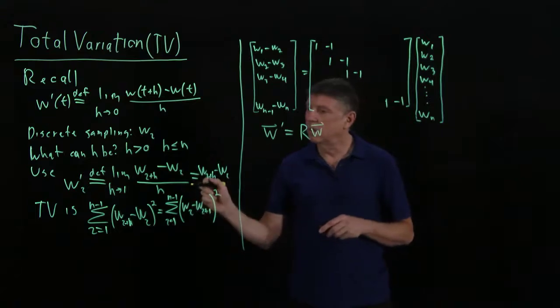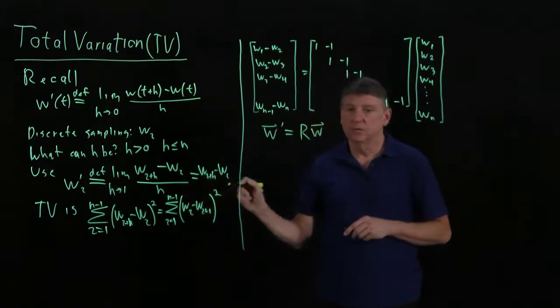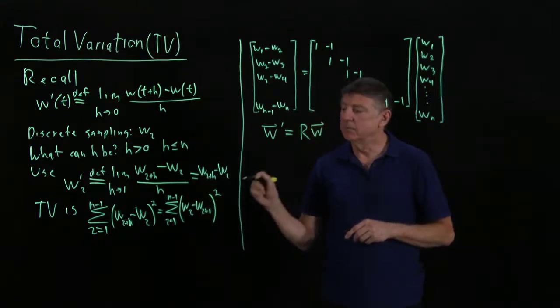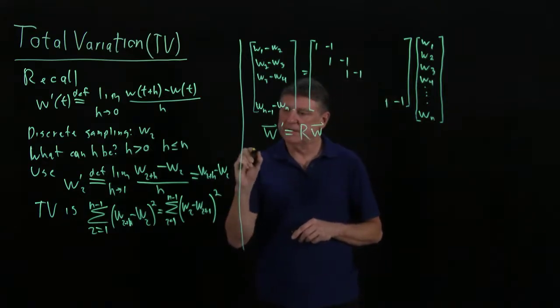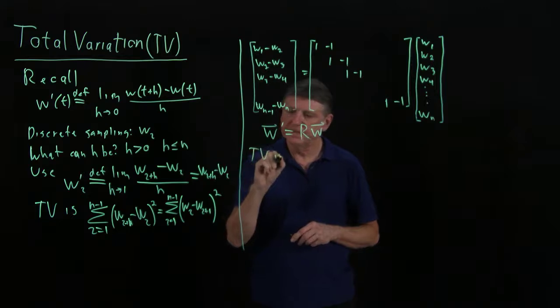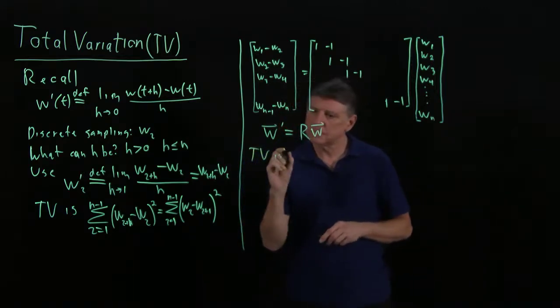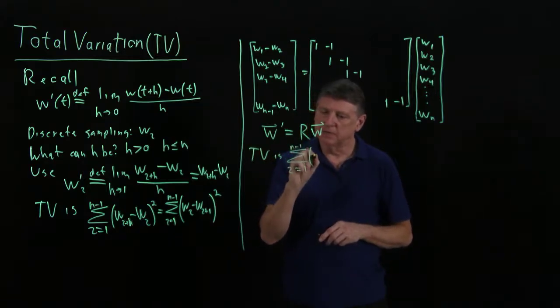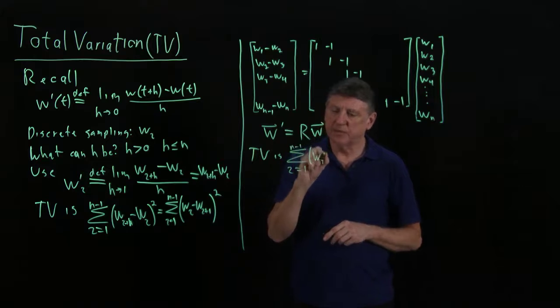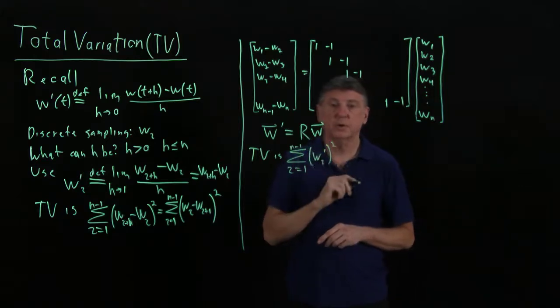So now I can write that discrete regularizer in a number of ways, right? I can say that the total variation is, I can say that that is the sum as i goes from 1 to n minus 1 of, now I'll write that as wi prime squared.